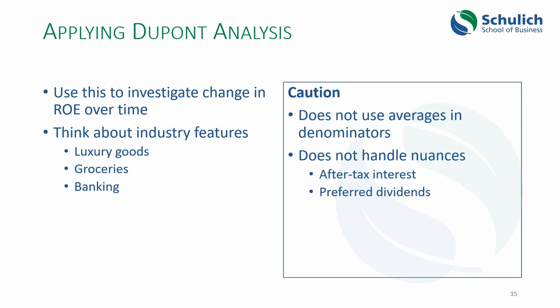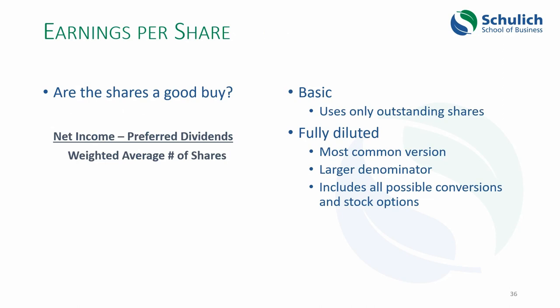Earnings per share is an interesting calculation that is susceptible to manipulation by managers. You take net income minus preferred dividends, then divide by the weighted average number of shares. The problematic part is the weighted average shares calculation. If the company issued shares partway through the year, the weighted average depends on when they were issued — if issued toward the end of the year, the share count was low for most of the year, and the weighted average simply takes into account the days on which shares were issued or repurchased.